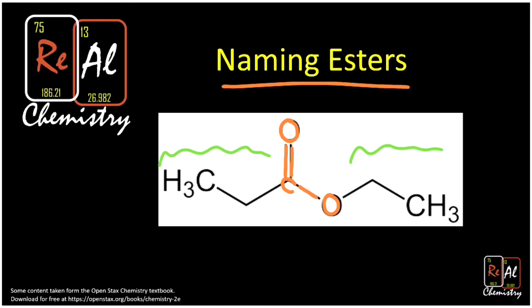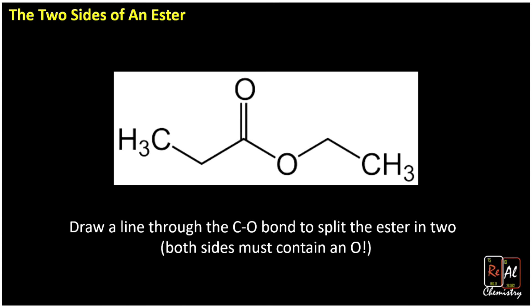If we want to name an ester, we have to do something kind of unique. We have to split in half the molecule. We're going to split it right through that special functional group that we highlighted before. We want to draw a line through the C-O single bond. Notice there's just one line here. We're thinking about the C-O single bond to split the ester in two, and we need to make sure both sides still contain an oxygen. So this is that C-O single bond that we're talking about. And we want to split the molecule in half right there.